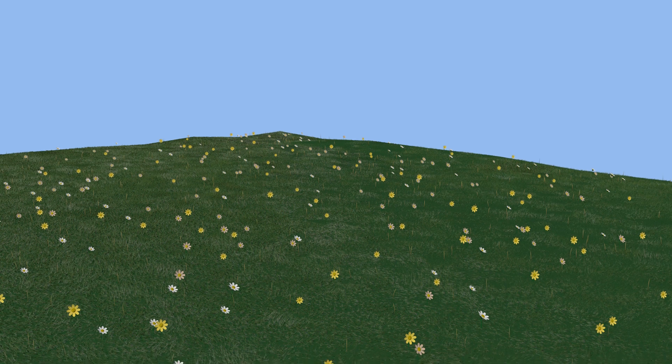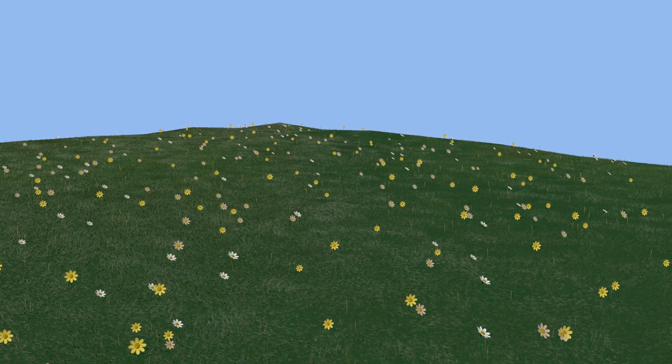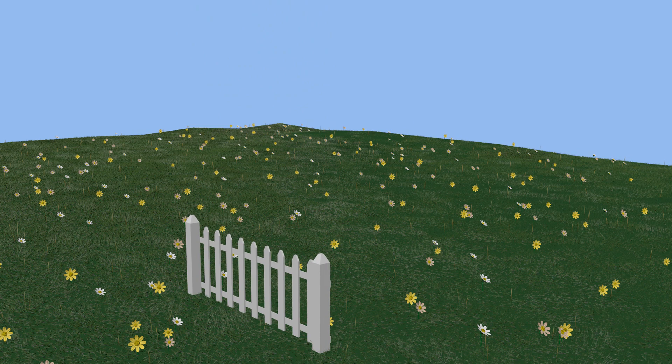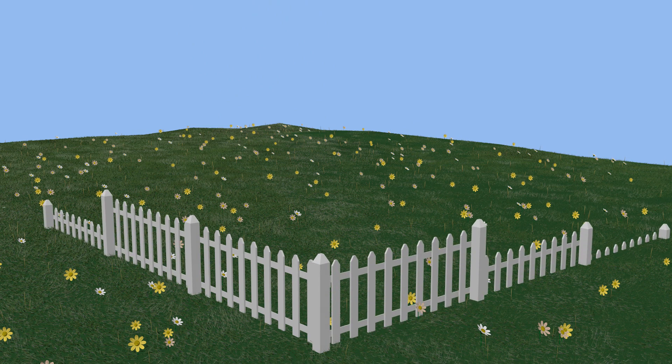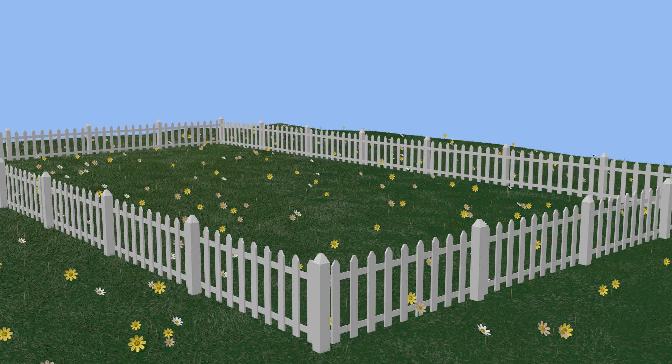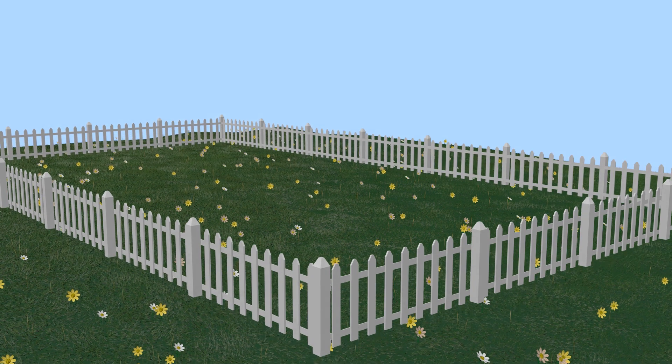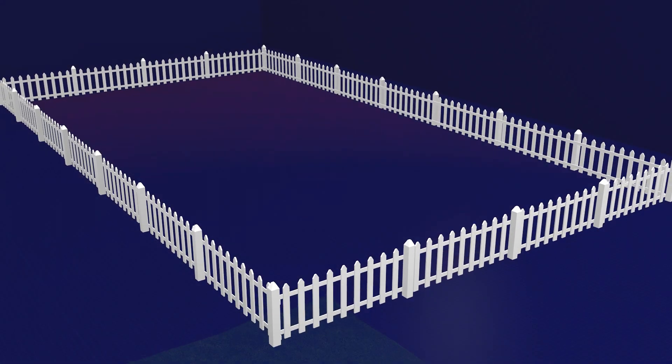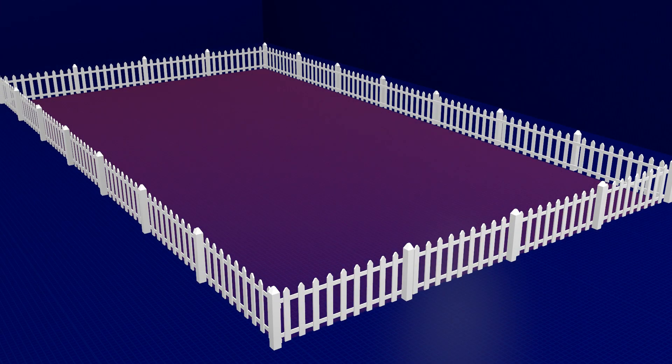Imagine you bought a field and you decide to put fence on this field. In fact, you decide to put fence along the entire property line. Now the property line of this field is a rectangle. Enclosing the field required 800 feet of fence.